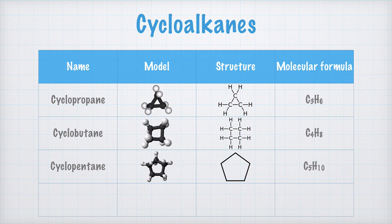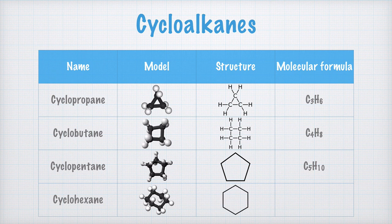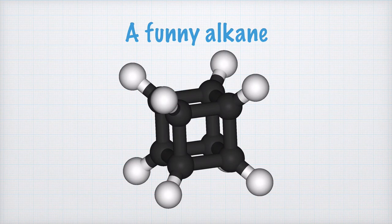The final cycloalkane in this table is, of course, cyclohexane. Six carbon atoms linked together with covalent bonds in a circular structure gives us this structural formula and a molecular formula which reads C6H12. The final alkane I want to discuss in this video is a rather funny one. In this alkane, there are eight carbon atoms linked together like some sort of cube, and yes, this molecule is actually called Cubane.